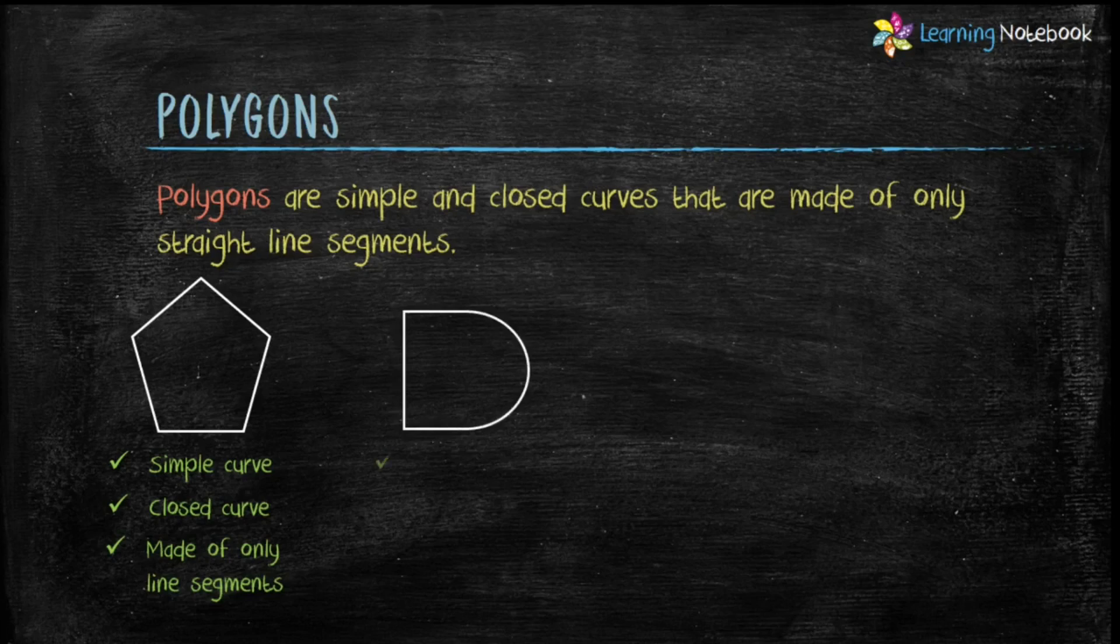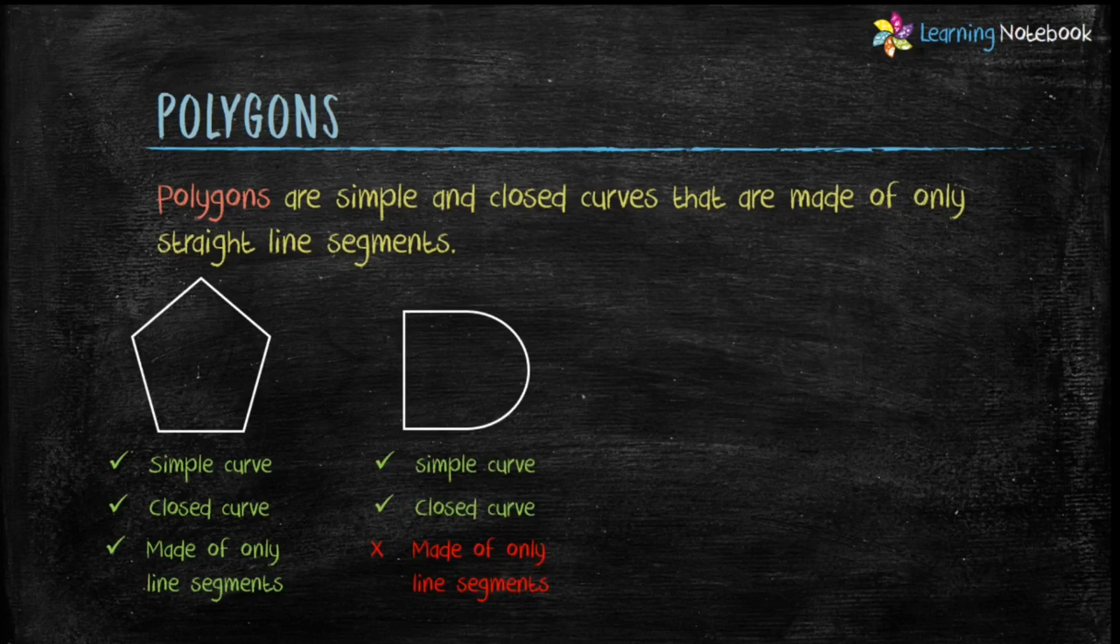Second figure is a simple curve, a closed curve but it is not made of only line segments. Therefore, this second figure is not a polygon.